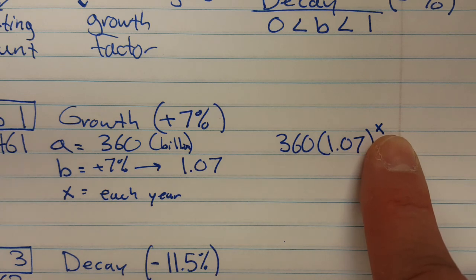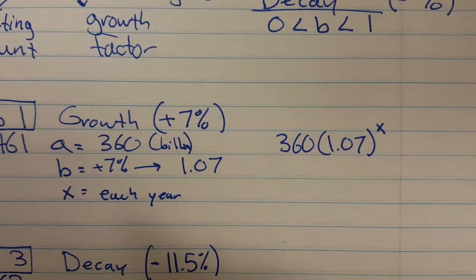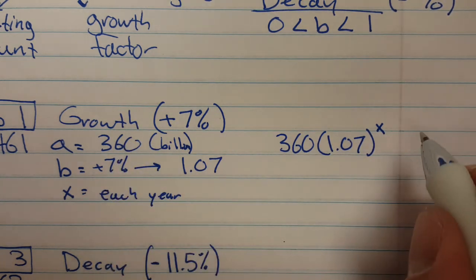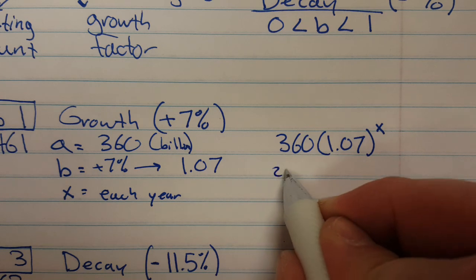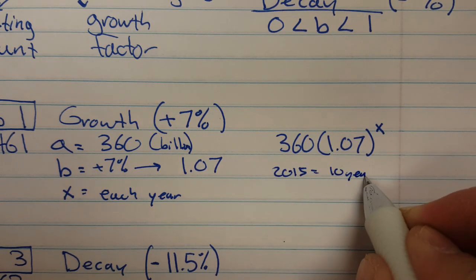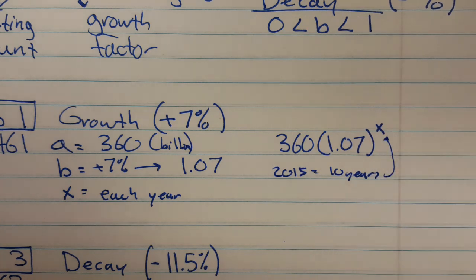I think it actually wants you to find how much money will be spent by the year 2015. So if this is the year 2005 and they want you to do 2015, that means 10 years have gone by. So 2015 equals 10 years have gone by.